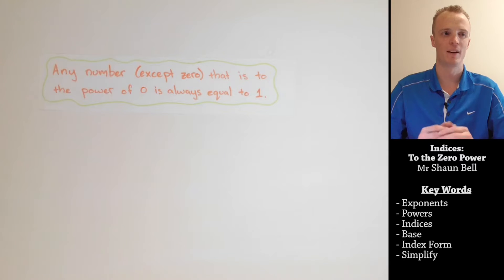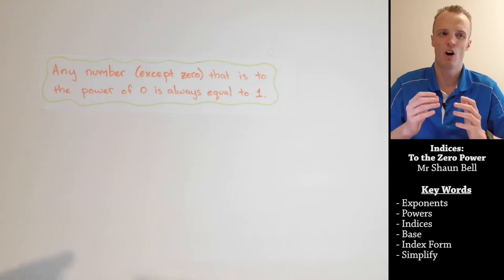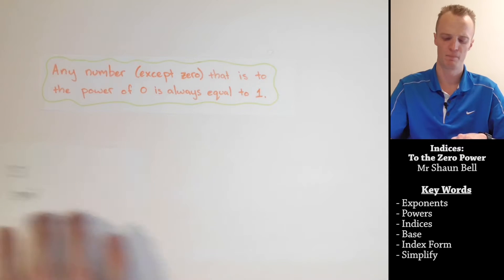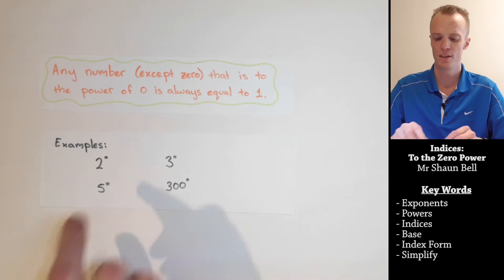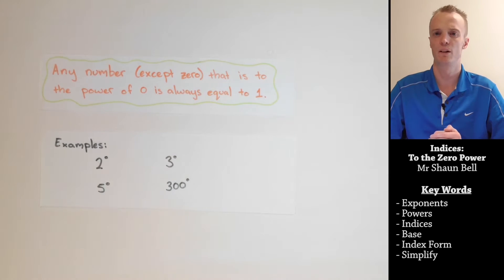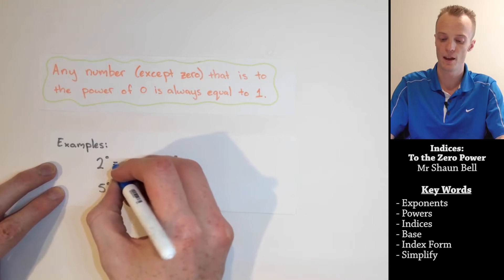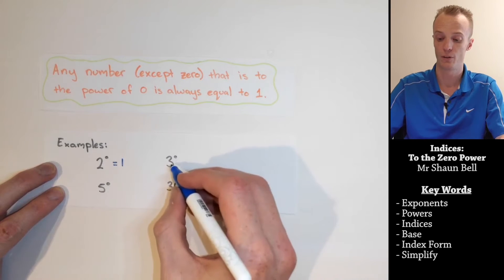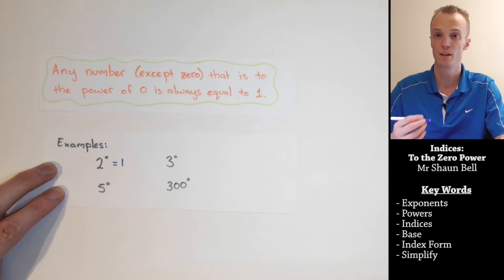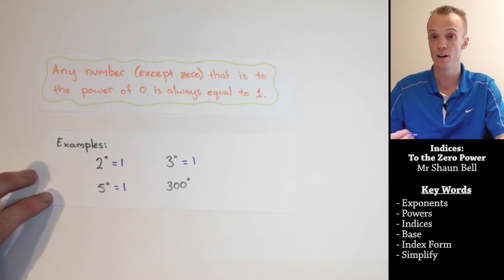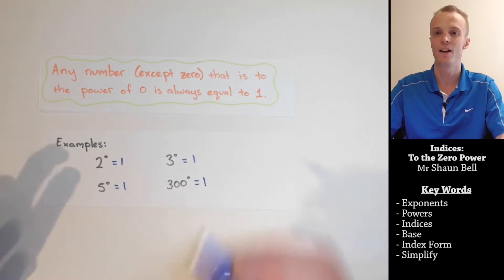Today I'm actually going to start with a rule. When we have any number except for zero that is to the power of zero, it always equals one. So what does that mean? Here are some examples where the exponent is equal to zero. Two to the power of zero equals one. Three to the power of zero equals one. Five to the power of zero will also equal one. Three hundred to the power of zero will also equal one.